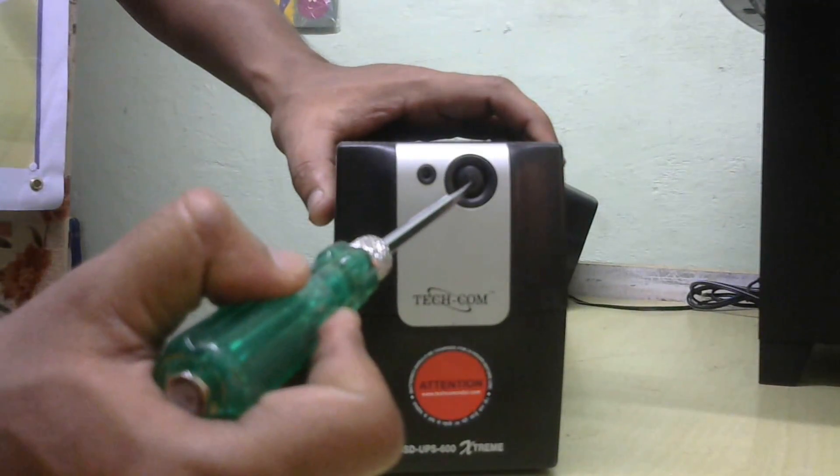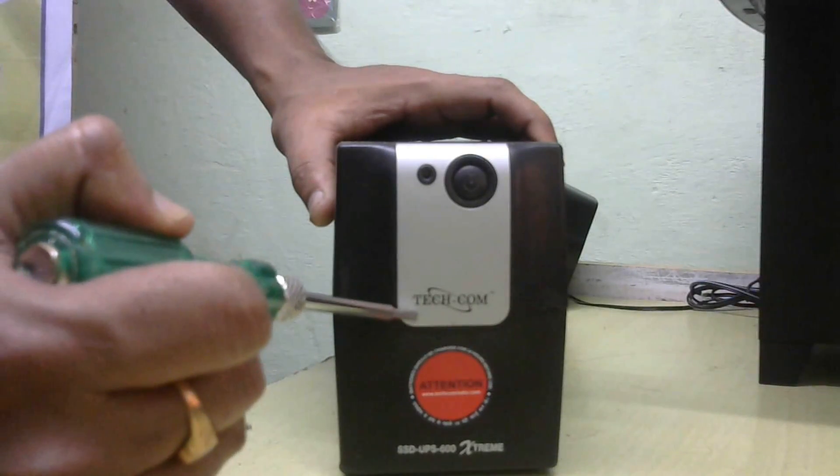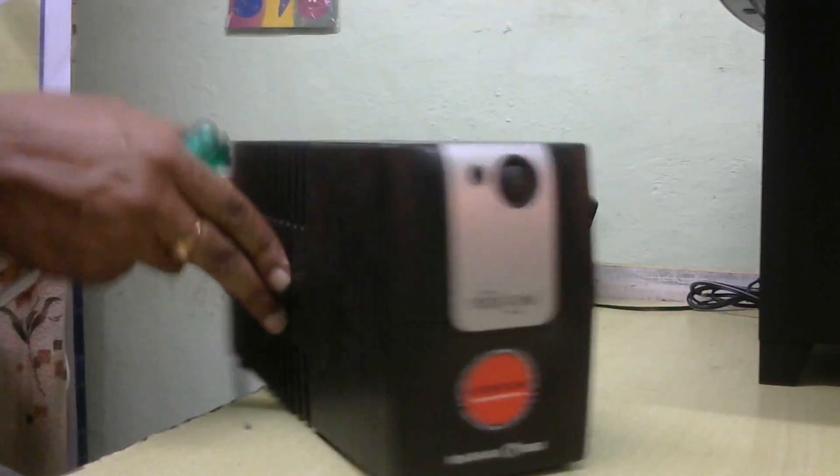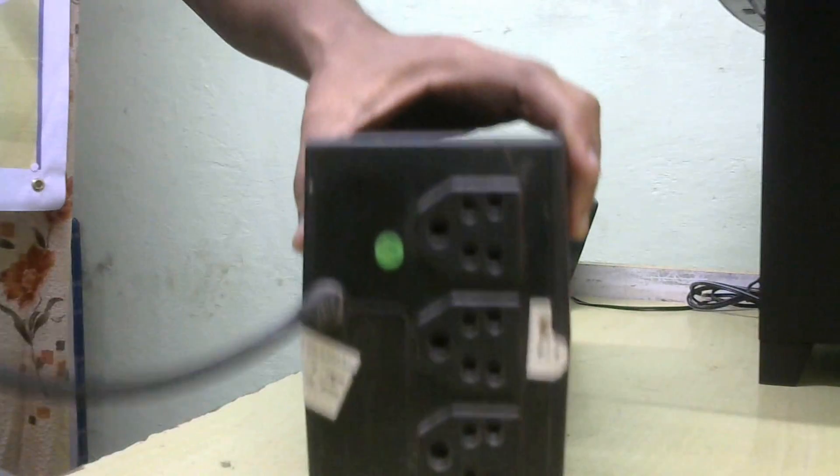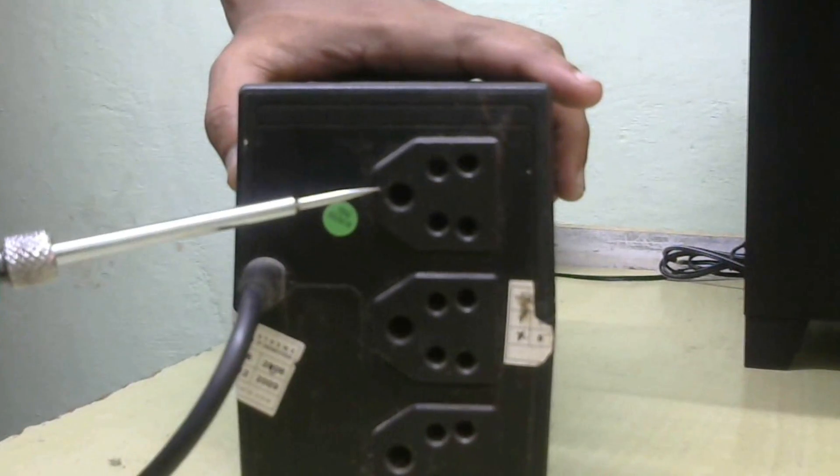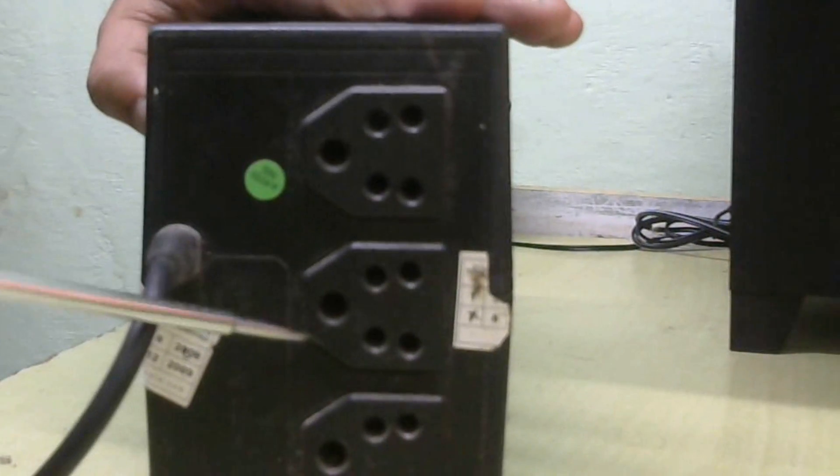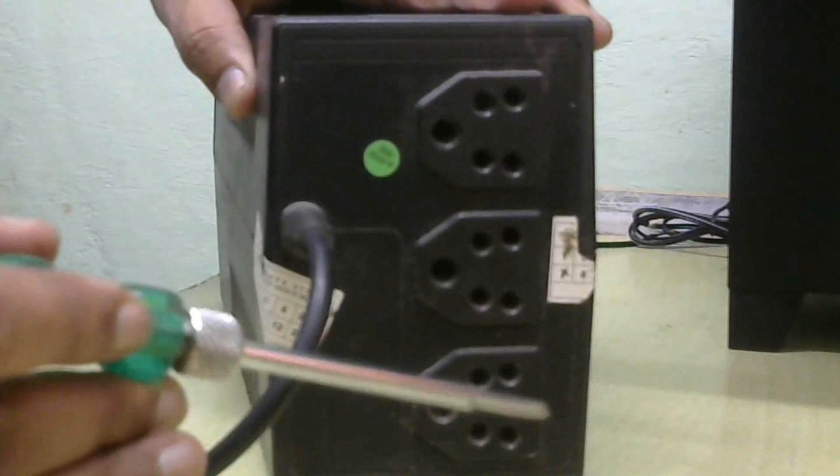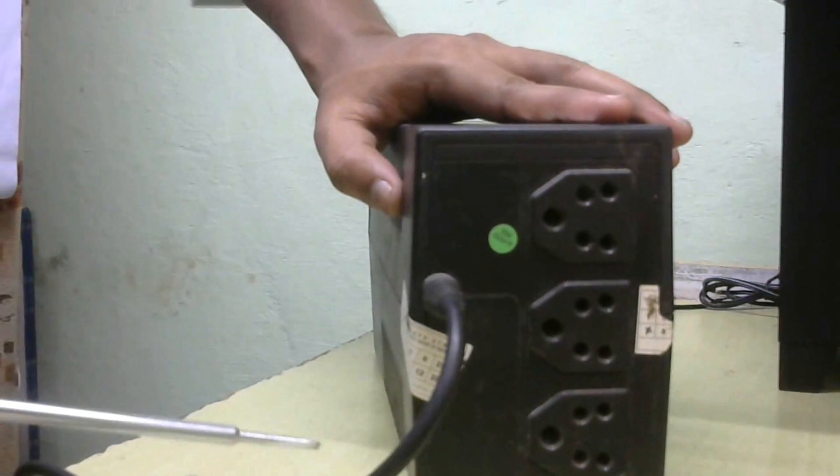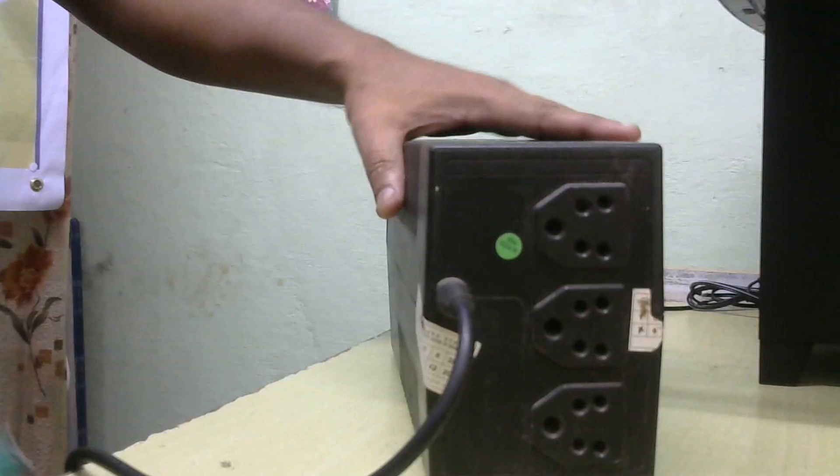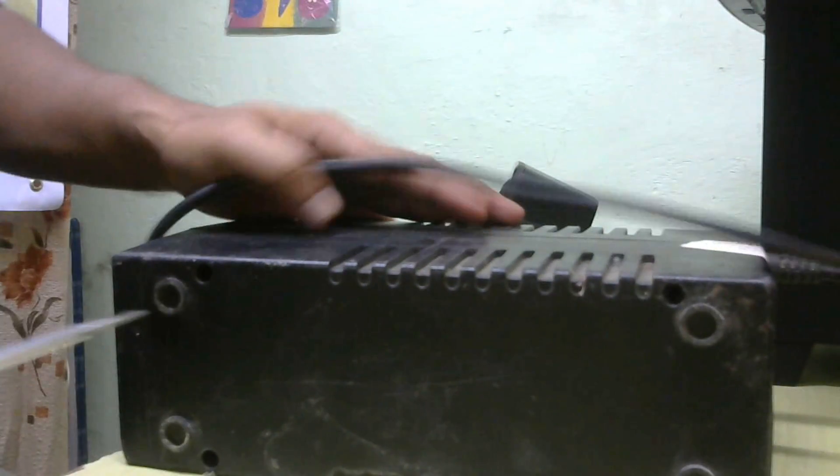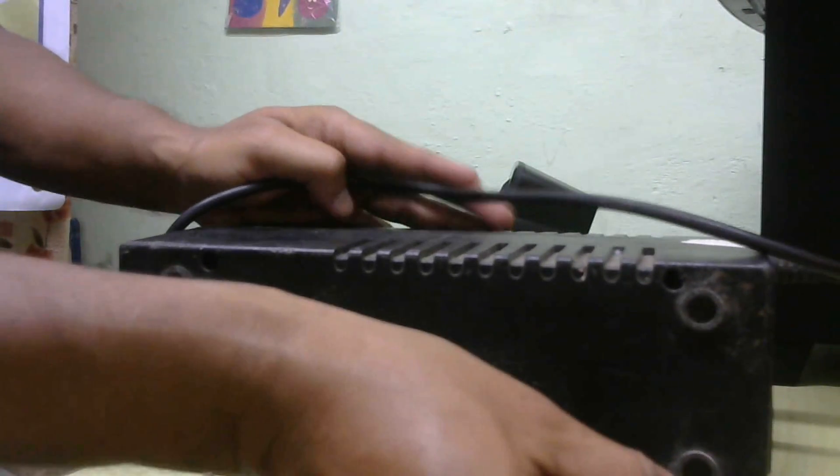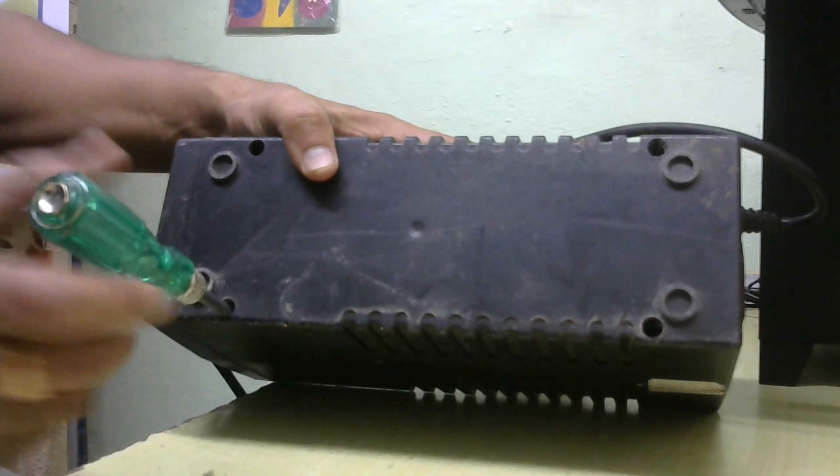This is the power on-off switch, this is the power LED, and this is the data LED. On the back side there are three sockets - one for the monitor, second one for the CPU, and third one for the printer. Now I will open this. There are four screws and I will remove them.